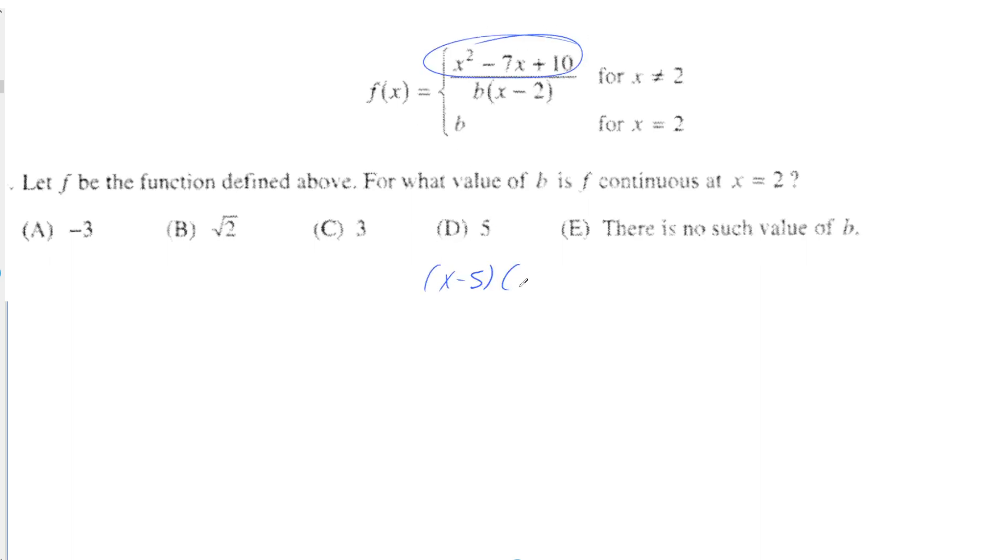So that would get you x minus 5 times x minus 2, and at that point, you would be able to cancel the x minus 2s. So that would leave you with just x minus 5 over b.